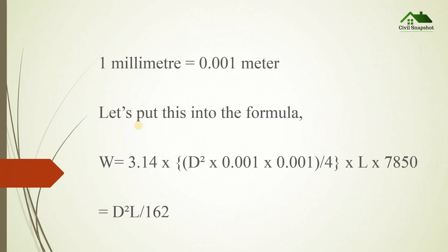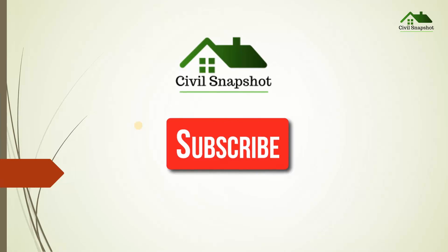1 millimeter = 0.001 meter. Let's put this into the formula. W = 3.14 × D² × 0.001 × 0.001 ÷ 4 × L × 7850 = D²L/162. I hope you all understand this calculation.